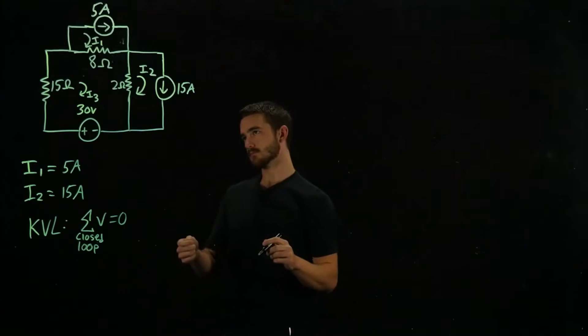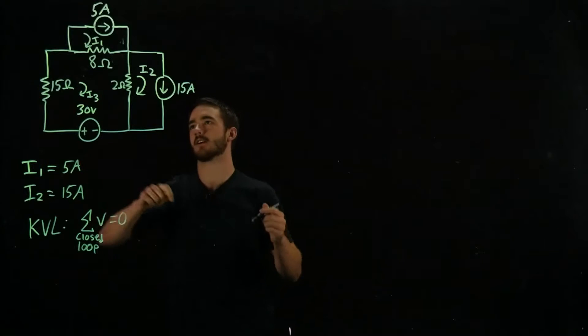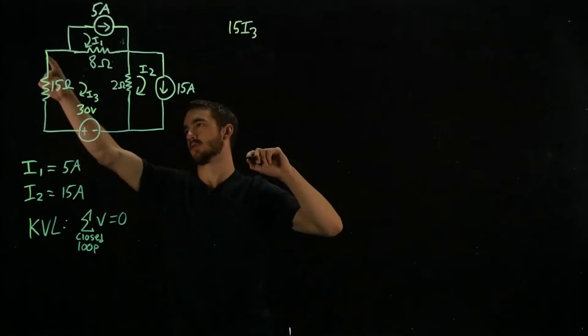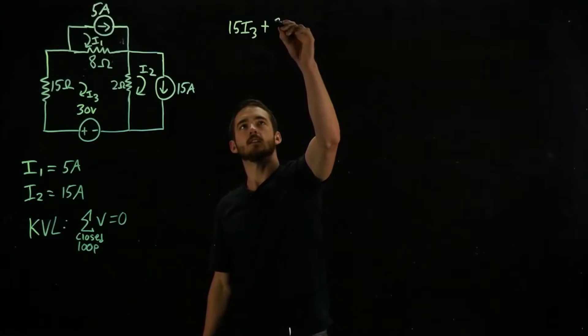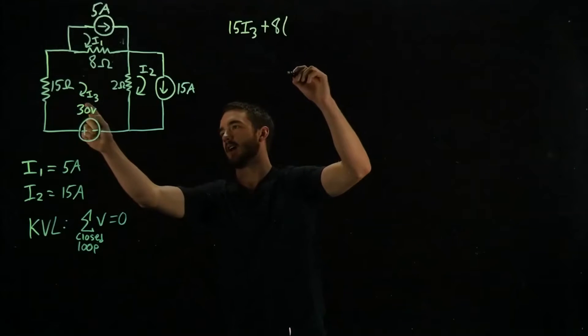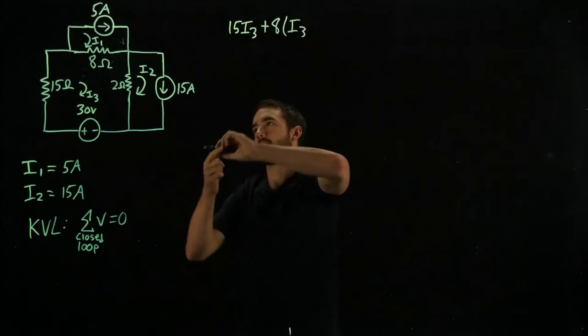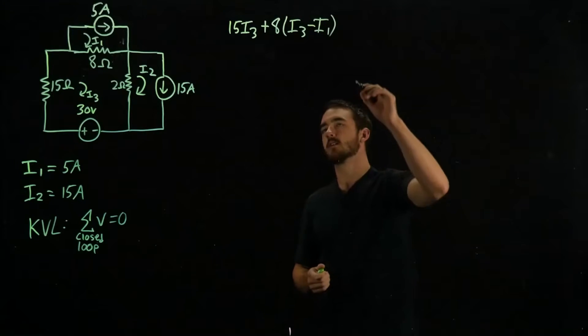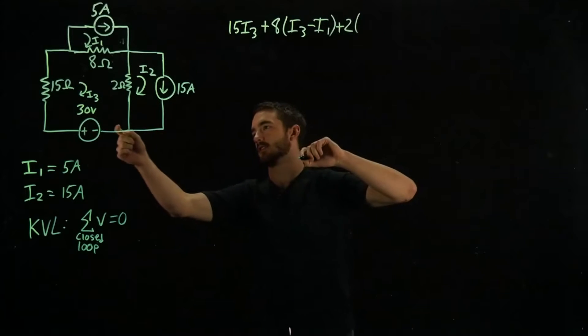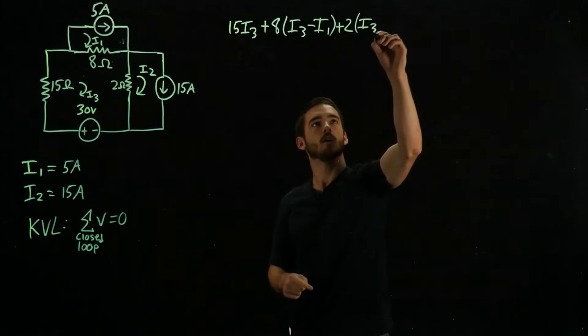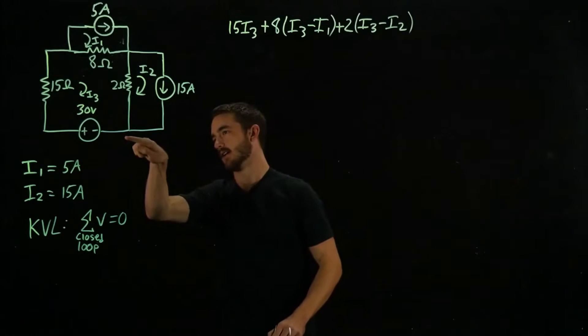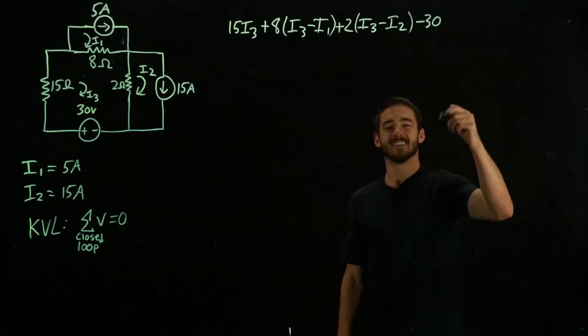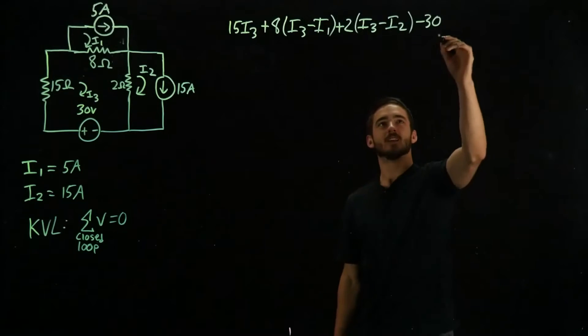So let's see. We'll go this way. So we'll have 15 times I3. That is the voltage being dissipated across that resistor. And then we'll have plus 8. We're starting here now. 8 times I3, which is going this way. And then I1 is going this way. So we have to subtract that minus I1. And then we have to account for this right here, plus 2. And that's going to be I3 minus I2. And then we always follow the sign of the voltage source. So we're going to subtract 30 volts. And this is all going to equal 0.